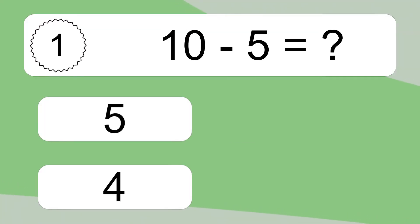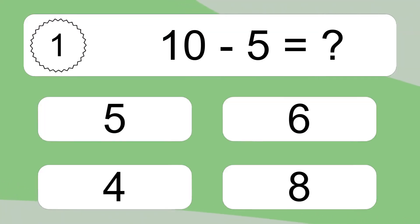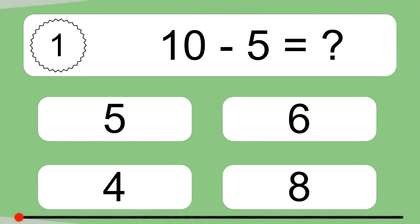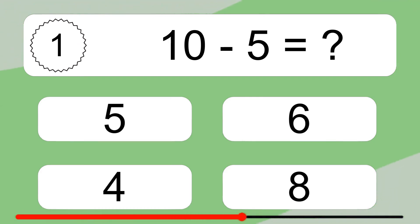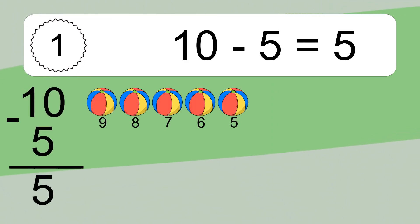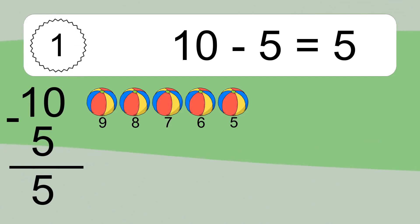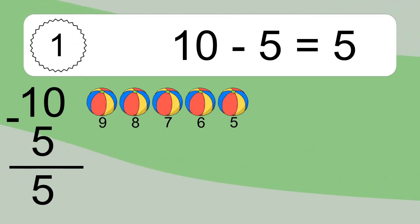10 minus 5 equals what? 10 minus 5 equals 5. Let's count it: 9, 8, 7, 6, 5.